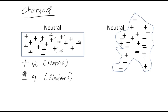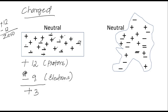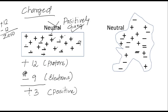Now let us check the charge of this first material. Earlier it was having 12 plus and 12 minus — charge was zero. Now we have plus 12 and minus 9, giving a net of plus 3. Plus 3 means it is positive. So is this material neutral now? No. It is a material which is positively charged. The charge of this material is now positive charge.